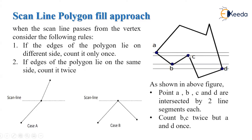To summarize: points A, B, C, and D are each intersected by two line segments. Count B and C twice because the edges of the polygon lie on the same side. Count A and D once because the edges of the polygon lie on different sides. These are the rules to follow while filling the polygon.